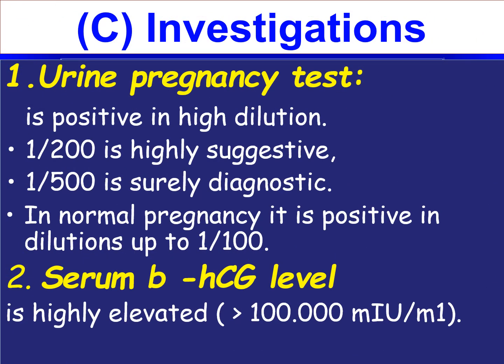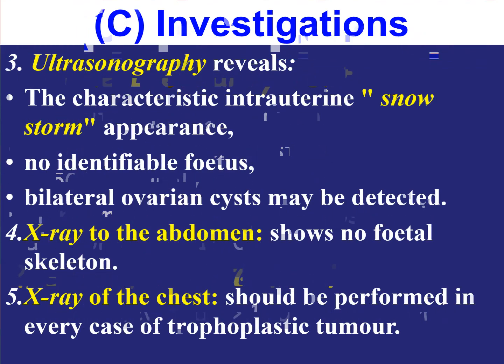Investigations include a urine pregnancy test, which will be positive even in high dilution — 1:200 is highly suggestive and 1:500 is diagnostic. In normal pregnancy, it is positive up to 1:100 dilution only. Serum beta-HCG level will be elevated, more than 1 lakh milli-units per ml. Ultrasonography reveals intrauterine vesicles; in complete mole, a snowstorm appearance with no identifiable fetus is seen. Bilateral ovarian cysts can also be detected on ultrasound.